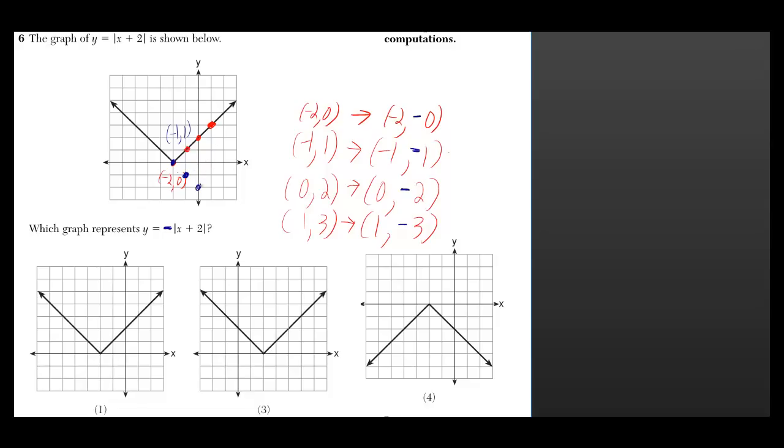If you look at (0, 2), that should go to (0, -2). And (1, 3) should go to (1, -3). So our graph should look like that. But also on the other side, you can kind of figure out that the same sort of thing is going to happen.